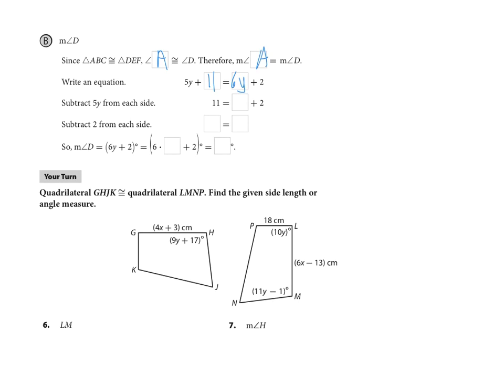Next, we're going to subtract 5Y from each side. So we simply get 11 equals Y plus 2. And then we're going to subtract 2 from each side. So my value for Y is 9. Now remember, we need to find the value for the measure of angle D, and so we need to substitute that 9 that we just found into the algebraic expression for angle D, which is 6 times Y plus 2, or 6 times 9 plus 2. And that is going to give us 54 plus 2, or 56 degrees.